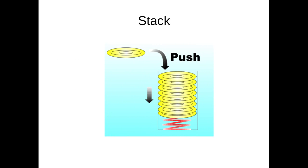Next is stack. Take a container where you store CDs — a CD container. Whichever disk you keep first goes to the bottom of the stack, then one by one you keep adding disks on top. The disk kept last will be at the top. But if you want to take the first disk kept at the bottom, you have to remove every disk placed on it.